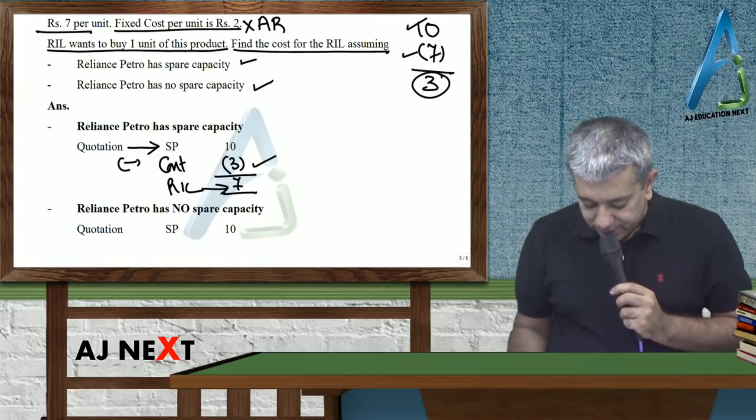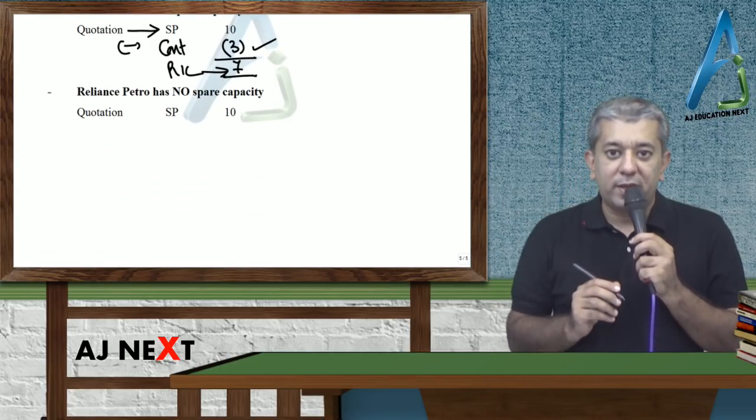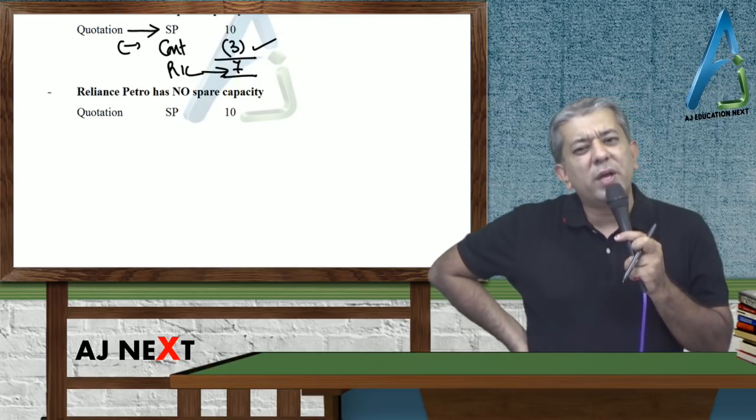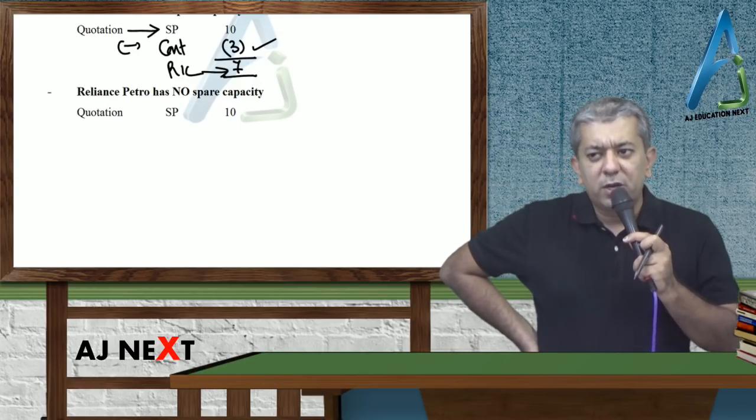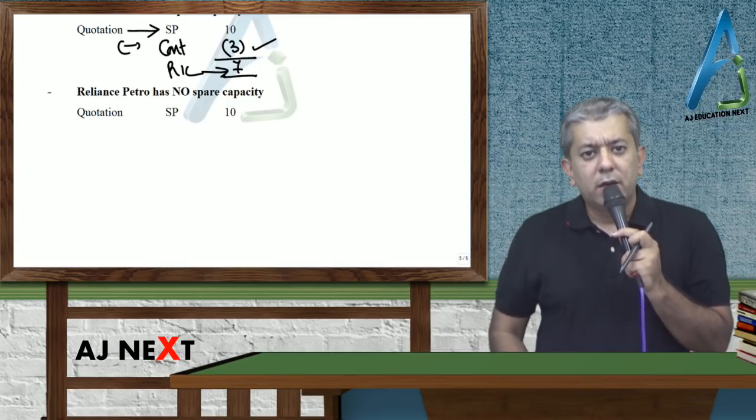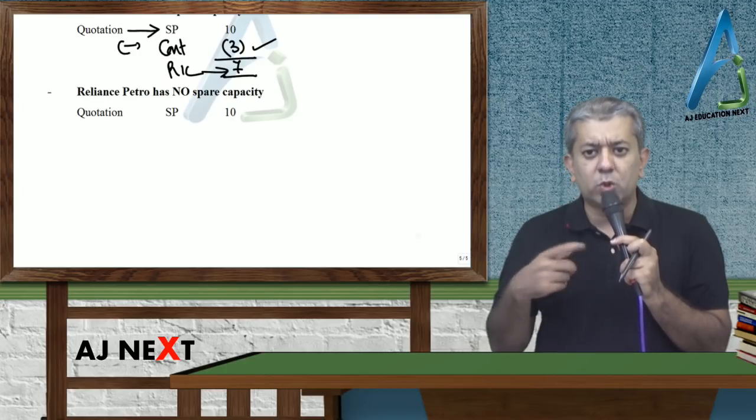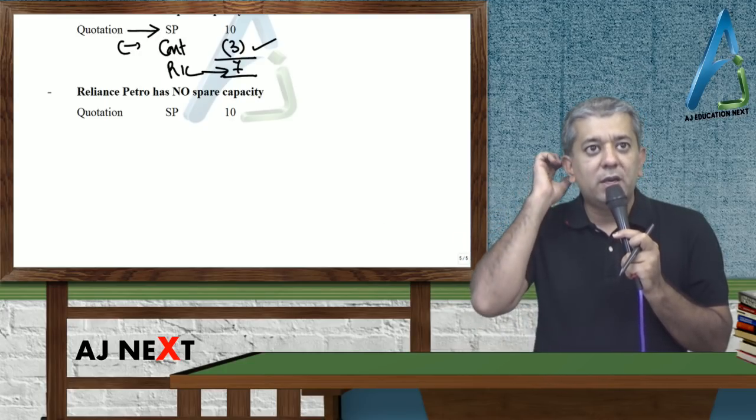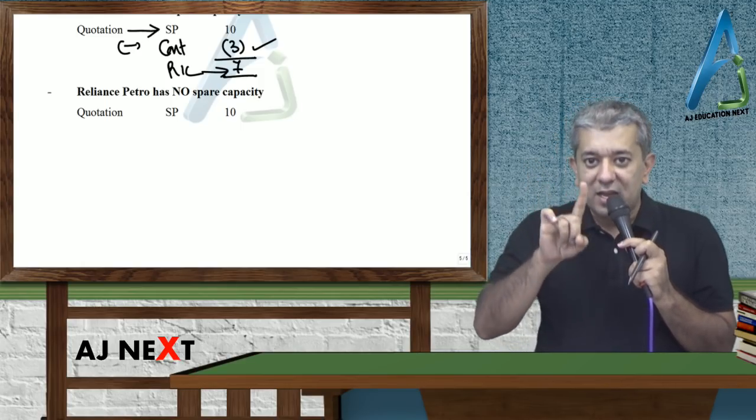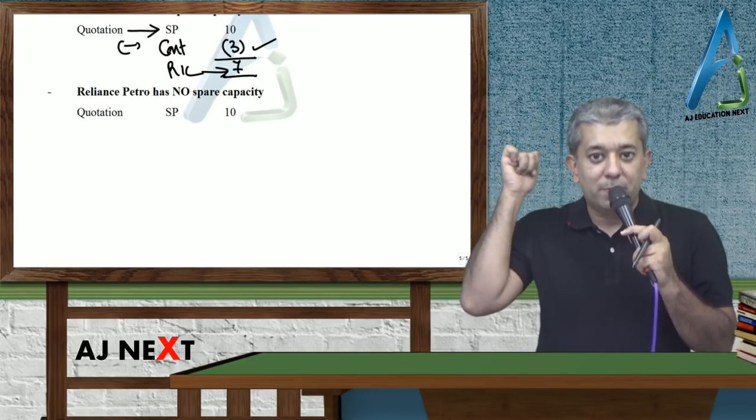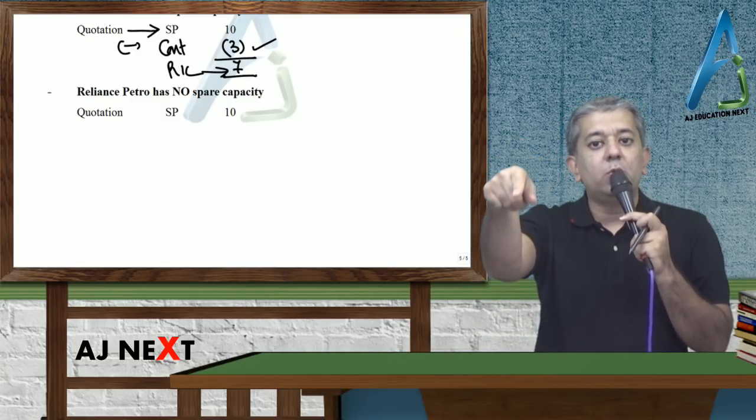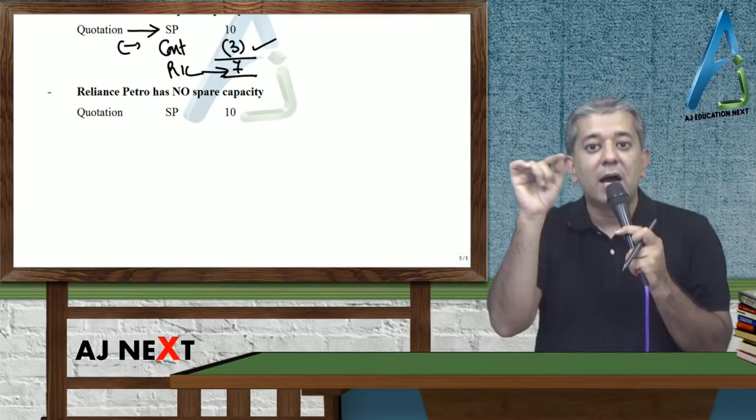Dousra: Reliance petro has no spare capacity. Toh kya hua? RIL ne reliance petro ko bola, hum ko ek unit do na. Reliance petro ne bola, aapne paas koi spare capacity ni hai. Hum log nahi bana ke deega. Reliance ne bola, bana ke do. You are my subsidiary company. Toh joh mein bolta hai, woh hoi ga. Toh abhi reliance petro ke paas ek hi option hai: sacrifice one unit in the market and sell one unit to reliance, that is RIL.